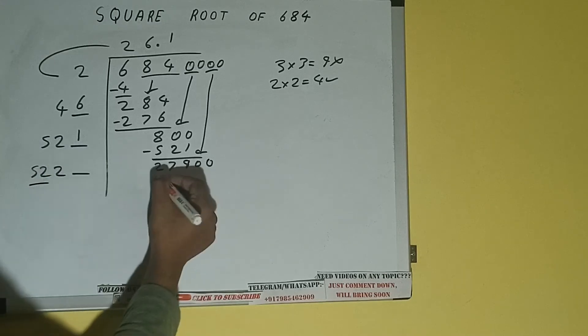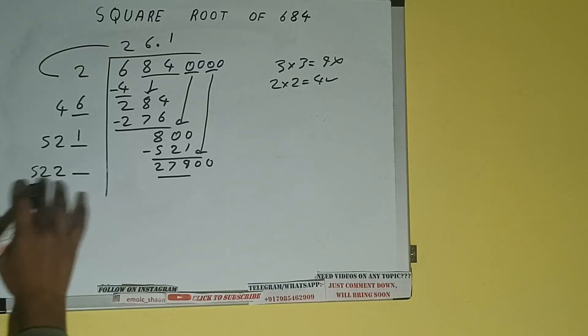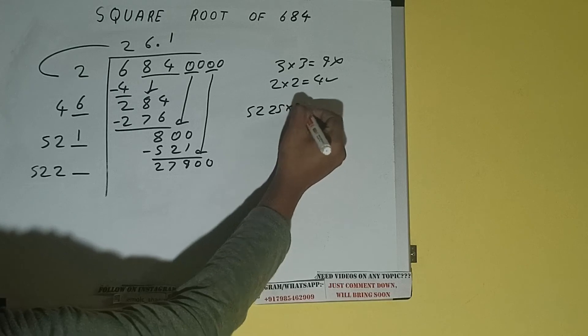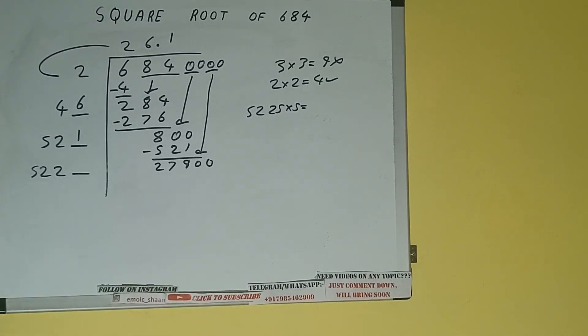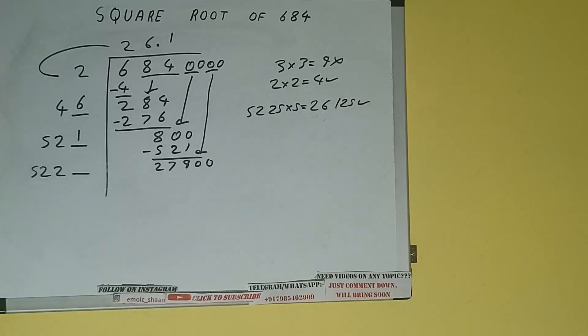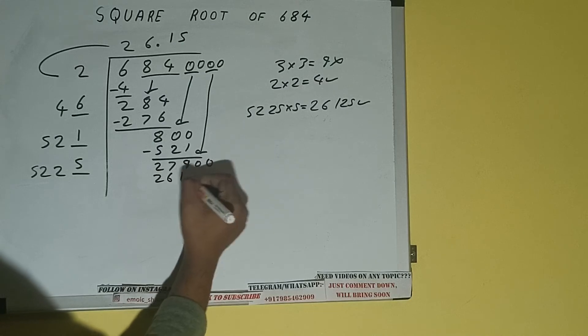Compare this 52 and 279. So 52 five times is 260, so we can try 5 times. So 5225 into 5 we can try, and we'll be having 26,125, which is good to take. So 5 here and 5 here: 26,125.